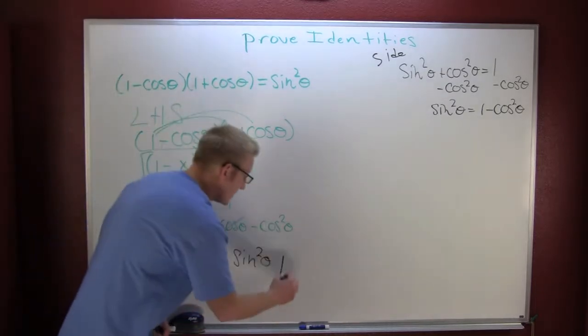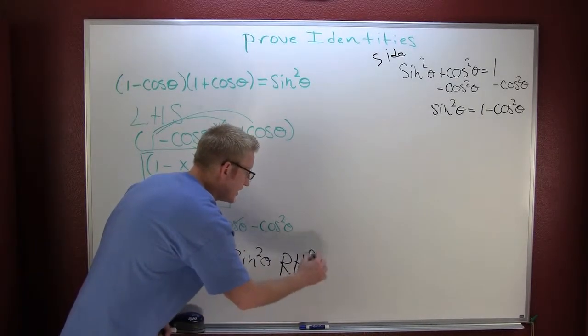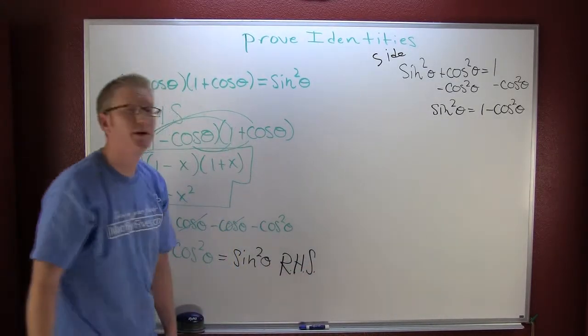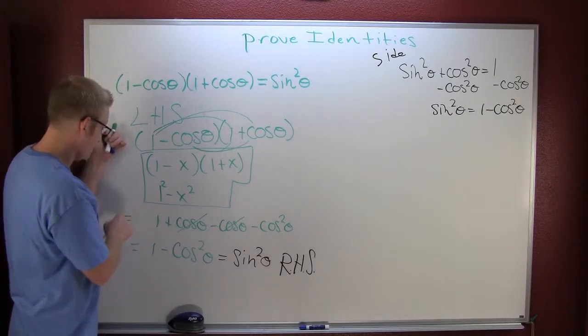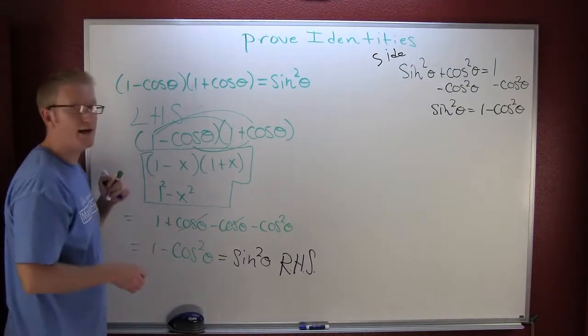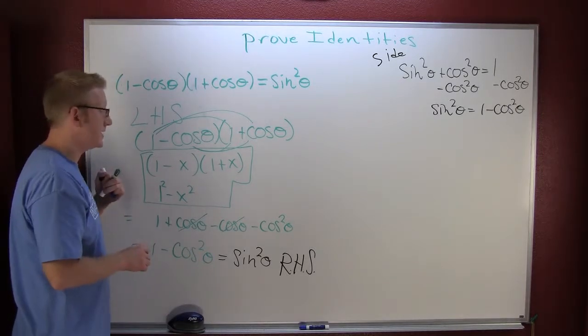Which just so happens to be the right-hand side. And because you were able to find a chain of equalities to lead to the right-hand side from the left-hand side, you've proven the identity.